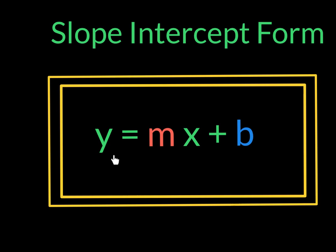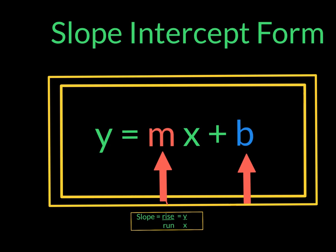This is the slope-intercept form of an equation. Notice on the left we have the y-term, then we have the x-term. This m represents the slope, which is the rise over the run, and this b represents the y-intercept. This is the point on the y-axis where the line will cross.